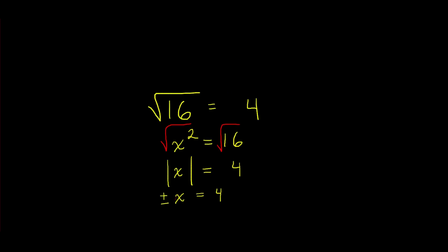And then you divide both sides by plus or minus, plus or minus one in this case. And of course, you get your beautiful two answers to the equation x equals plus or minus four.